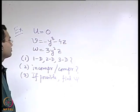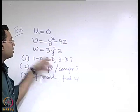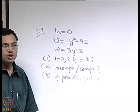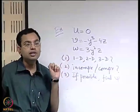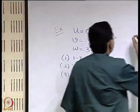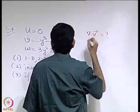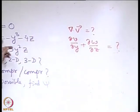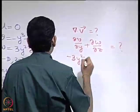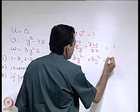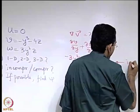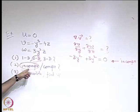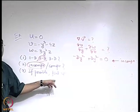For part one: it is a 2-dimensional flow because it has two velocity components. For part two — incompressible or compressible — we find the divergence of the velocity vector, because that gives the rate of volumetric strain; if it is zero the flow is incompressible. Checking the divergence: the first term is −3y² and the second is +3y², so they sum identically to zero. Therefore it is incompressible flow. Since it is 2D and incompressible, the stream function is defined, and we can now attempt to find it.